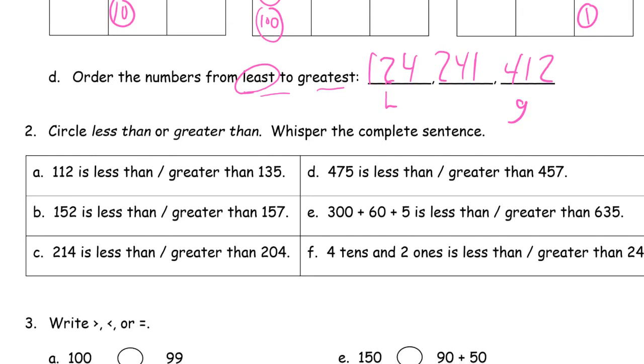And now for this one we're circling either less than or greater than each number. And we're going to say the whole sentence out loud when we do it. We have 112. Is that less than or greater than 135? Well, that's going to be smaller than 135, so it's less than. 152. Is it less than or greater than 157? It's less than 157. It's five less, exactly. 214. Is that less than or greater than 204? It's greater than 204. It's ten more. 475. And here we have 457. You notice that the digits are the, it has the same digits, but they're in different place values again. They switched the seven and the five for the five and the seven. But 475 is more than 457. So it's greater than.